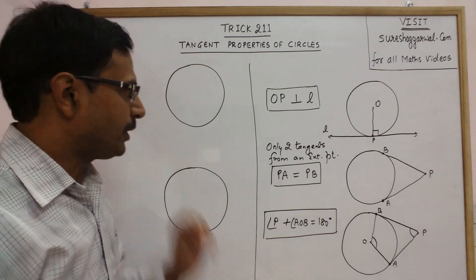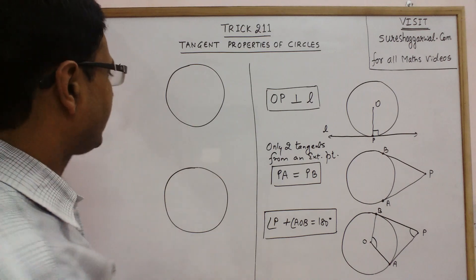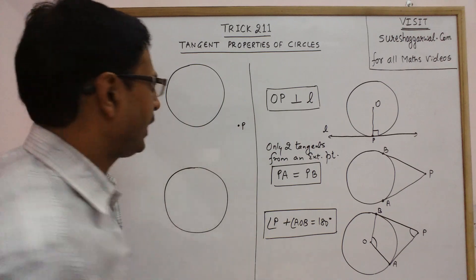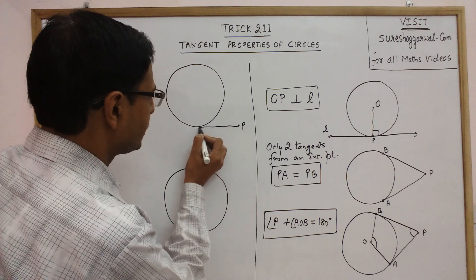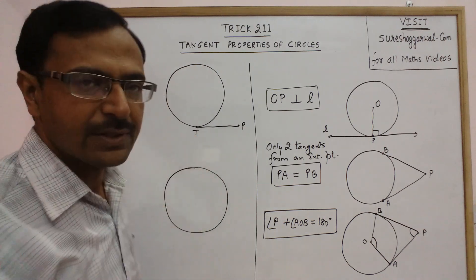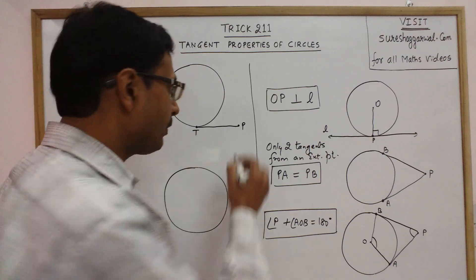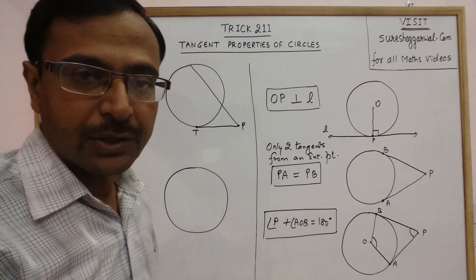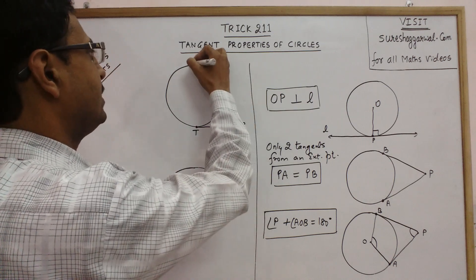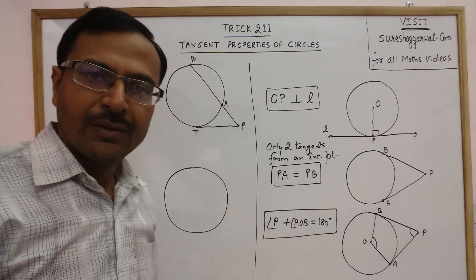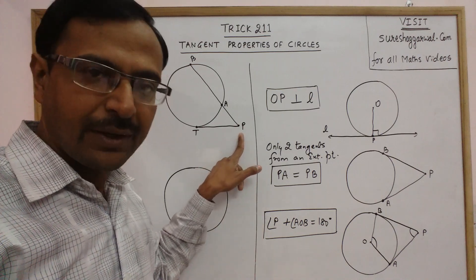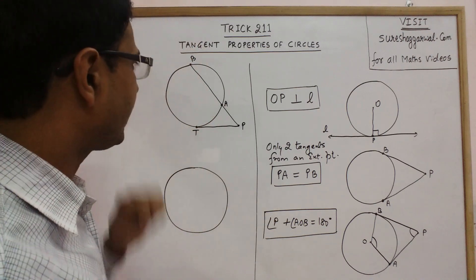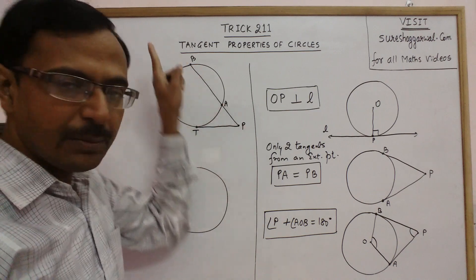Now the fourth property: I am again taking a point P in the exterior of the circle and from P I am drawing a tangent. The point of contact is T, so PT is the tangent. From P I am also drawing a line which intersects the circle at two points, A and B. This line, which starts from the external point and intersects the circle at two points, is called a secant. So here I have one tangent PT and one secant PAB.